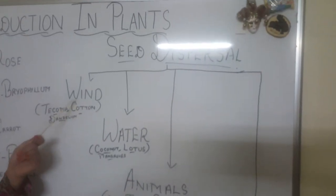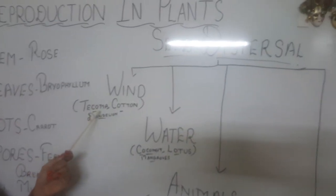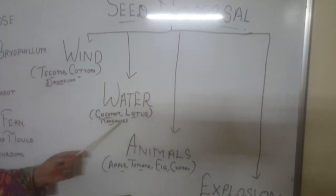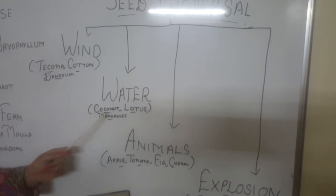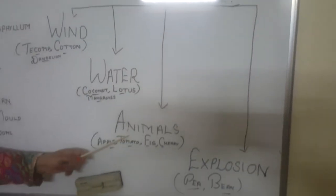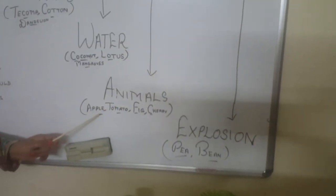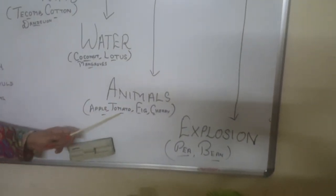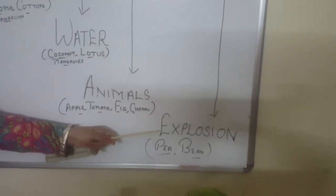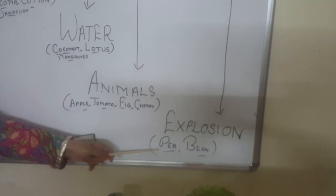Today we talked about seed dispersal. We talked about dispersal by wind, which is found in plants like tectona, cotton, and dandelion. Then dispersal by water, which is done in coconut, lotus, and mangroves. Next, dispersal by animals, found in apple, tomato, fig, and cherry. Then dispersal by explosion, found in pea and bean.